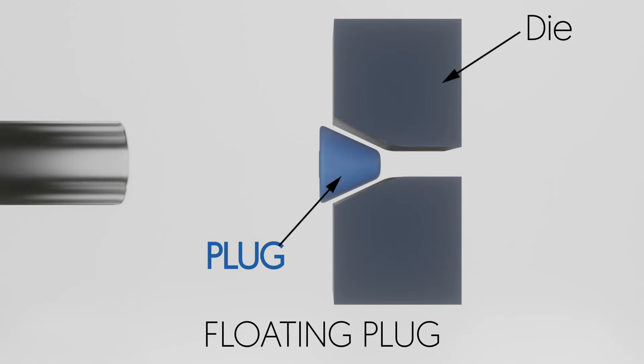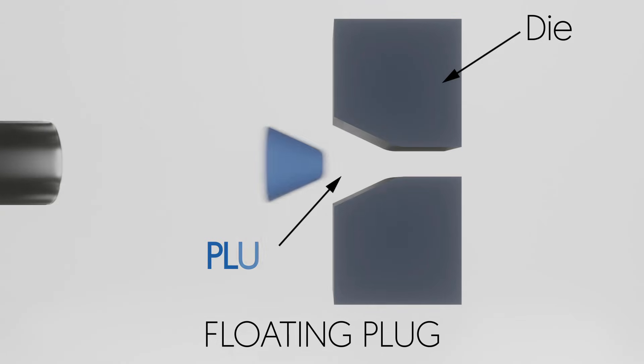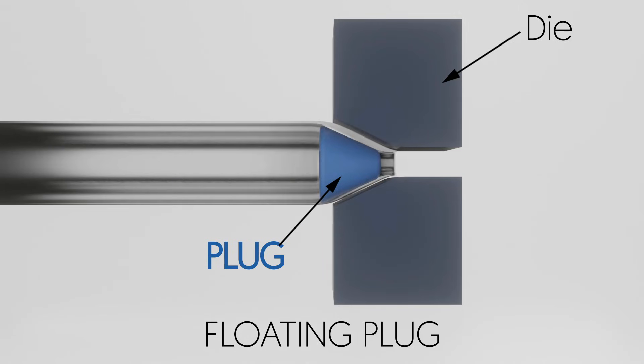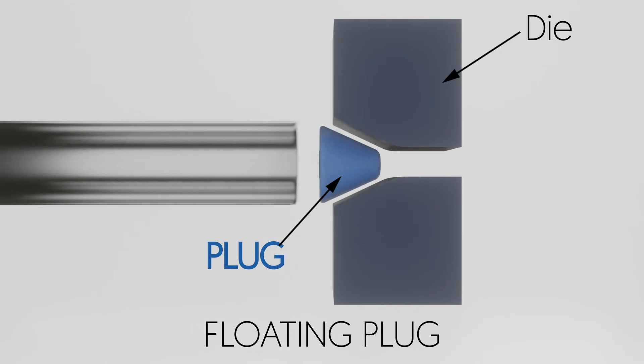Floating plug or mandrel: in this process, a floating mandrel or plug is used. In this case, the position of the plug or mandrel is controlled by the tangential and normal forces of the tube material. The friction force in the floating plug or mandrel is more than the fixed plug.